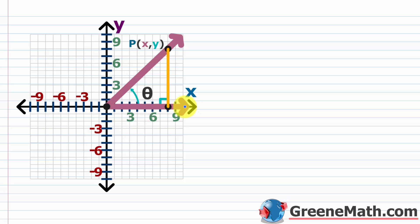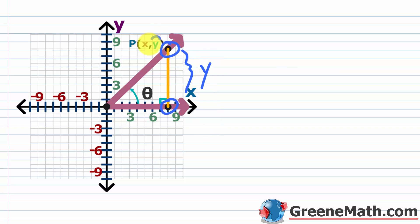We're going to kick things off by looking at an acute angle in standard position. This angle theta is in standard position, and we've picked a point on the terminal side — we'll call it (x, y), with actual coordinates 8 comma 8. The vertical distance from the x-axis up to that point can be represented simply as y, which is y minus 0.